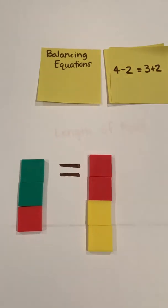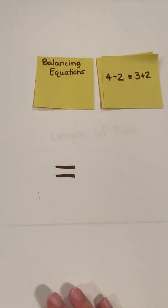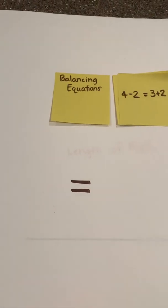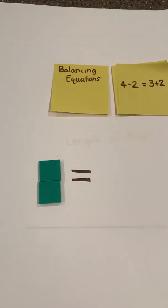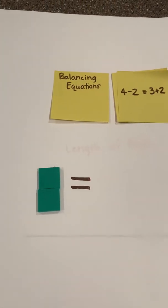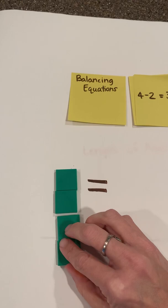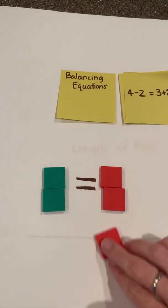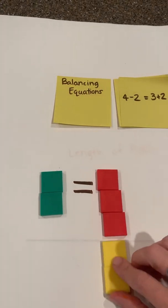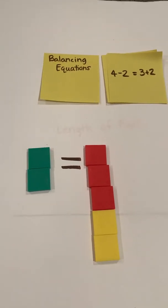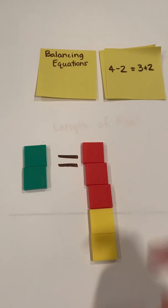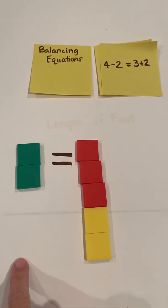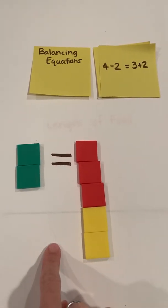Now, what if we mix subtraction and addition together? Let's try 4 minus 2. If I represent 4, and then if I take 2 away, and then on the other side of the equation, I have 3 plus 2. Is that true or false? That would be false, because I can see that 5 is not the same as or equal to 2, or 2 is not the same as or equal to 5.